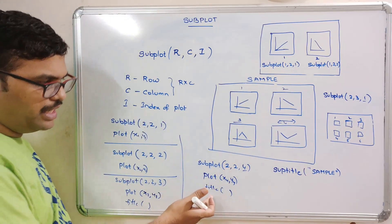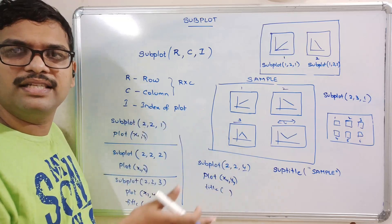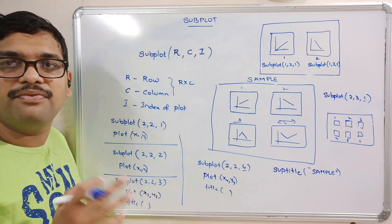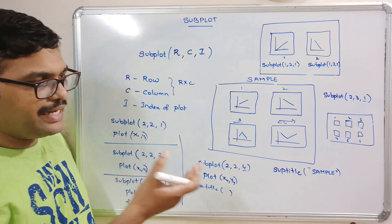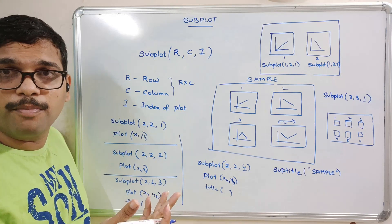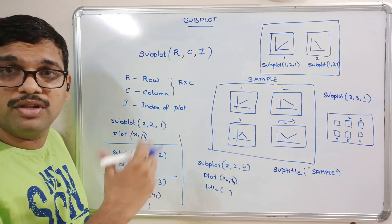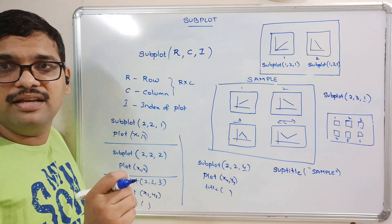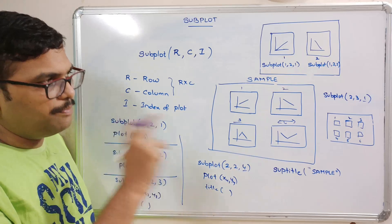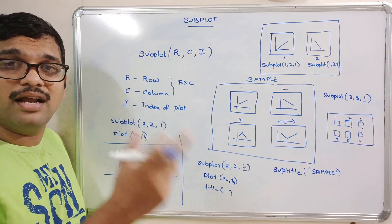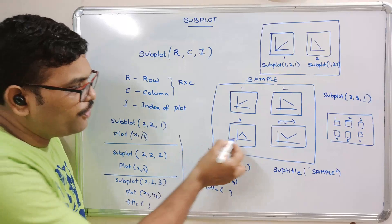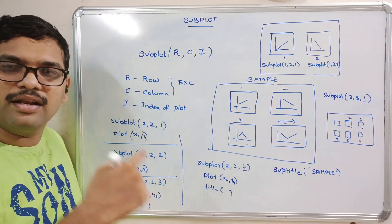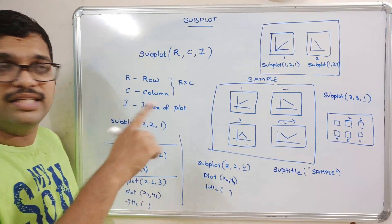You can also apply x label, y label, and titles to each plot, and for all those you can apply font properties. We call it a font, and we can apply font properties. As discussed in the previous session, we need to create a dictionary and pass it to the fontdict parameter so that the style, size, and color will be applied. If you are plotting lines, you can apply line properties like line width, line style, and line color.